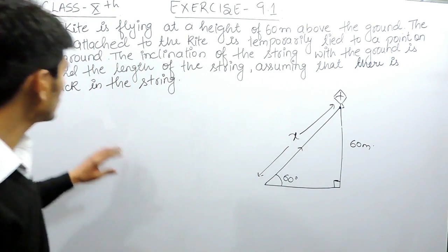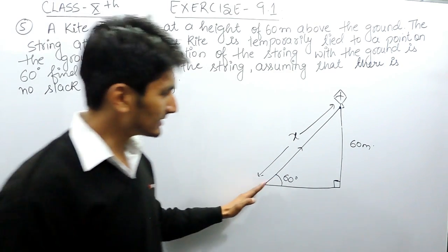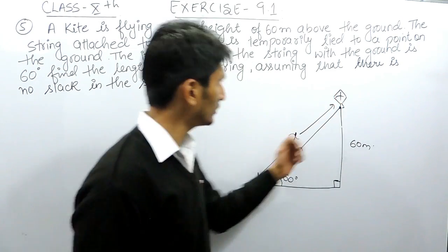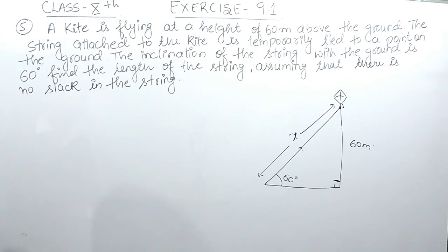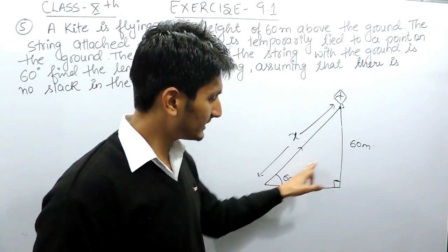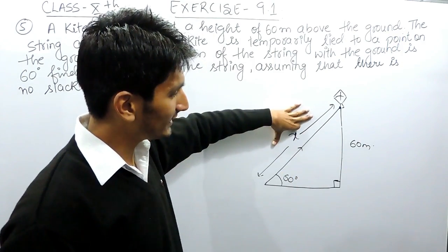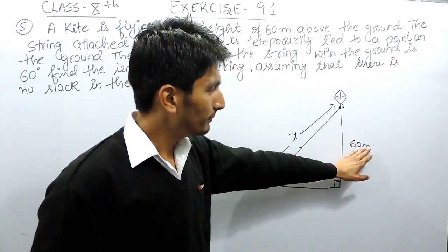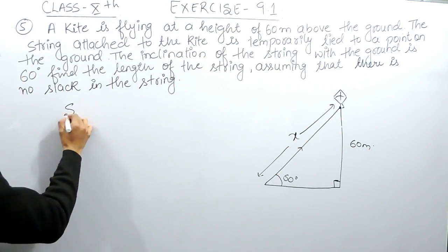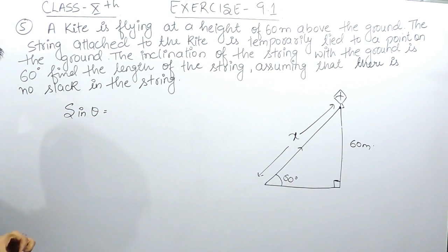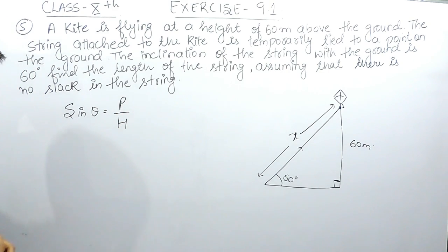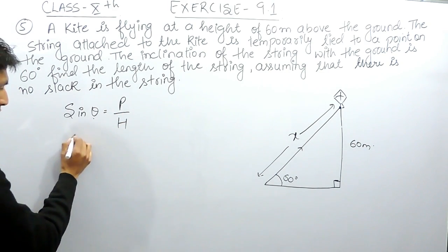When there is no slack in the string, we are assuming that this string is straight, not bending. Here, perpendicular is given to you, which is the side opposite to this theta, and you need to find the hypotenuse. For that, perpendicular and hypotenuse is the ratio sin theta, which is known as perpendicular upon hypotenuse.